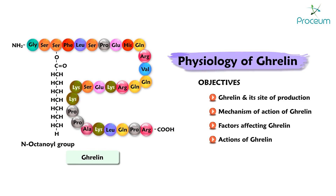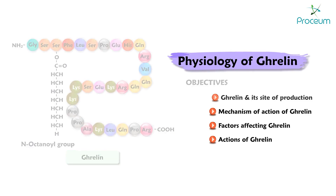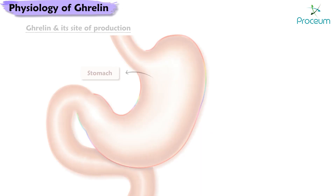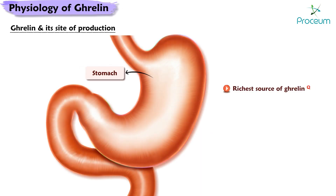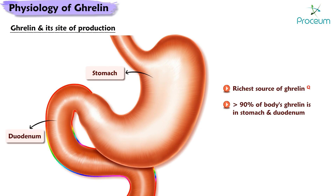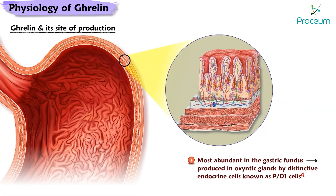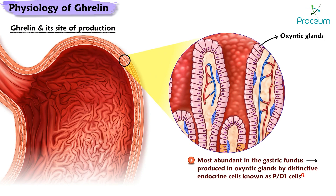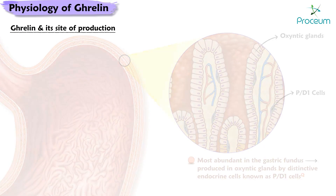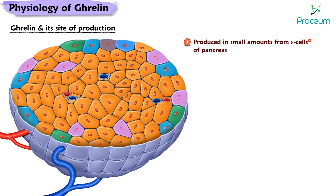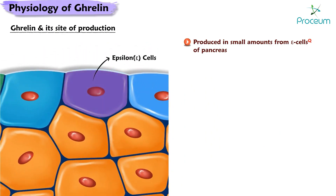In this video we will be discussing the physiology of ghrelin. The stomach is the richest source of ghrelin — over 90% of the body's ghrelin is in the stomach and the duodenum. Ghrelin is most abundant in the gastric fundus, where it is produced in the oxyntic glands by distinctive endocrine cells known as the P cells or D-type 1 cells.